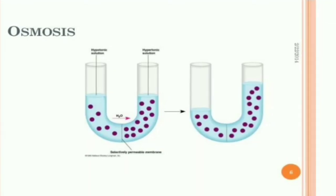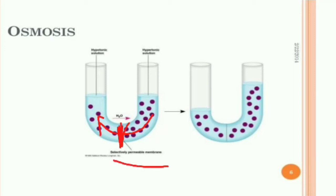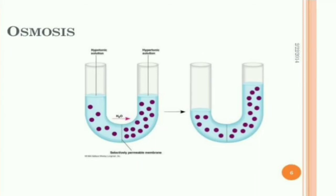The next process is osmosis. Here the substances move from higher concentration to lower concentration through a selectively permeable membrane. This is called osmosis.